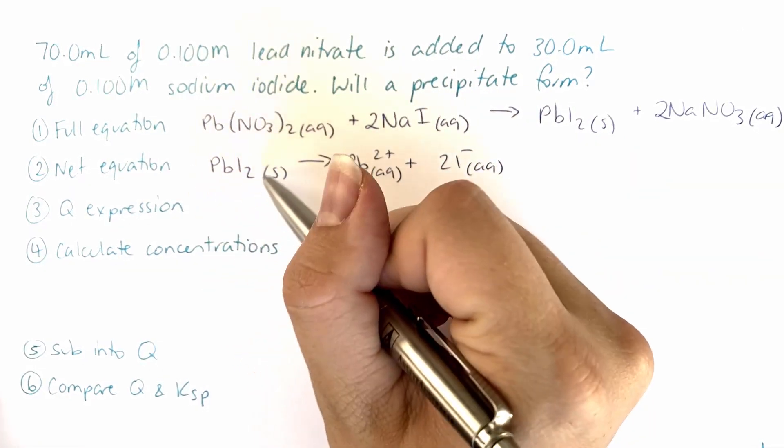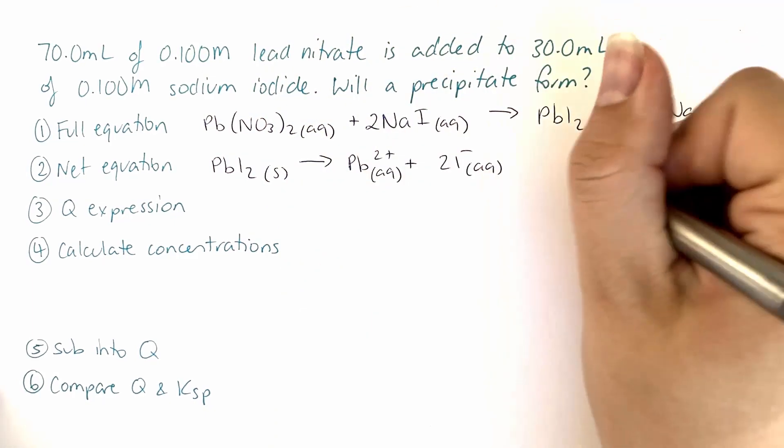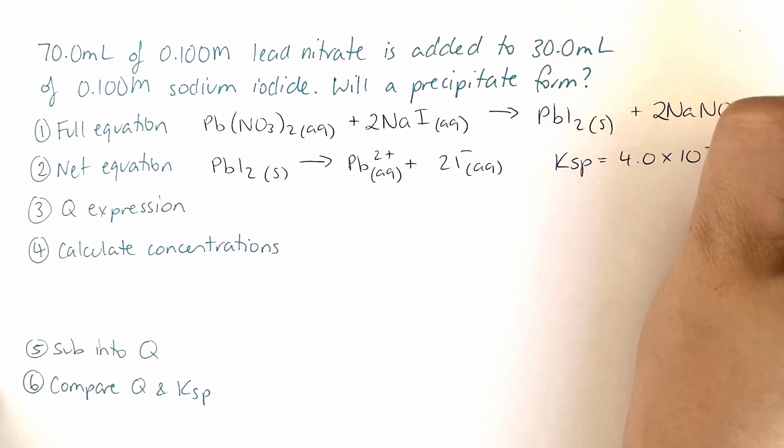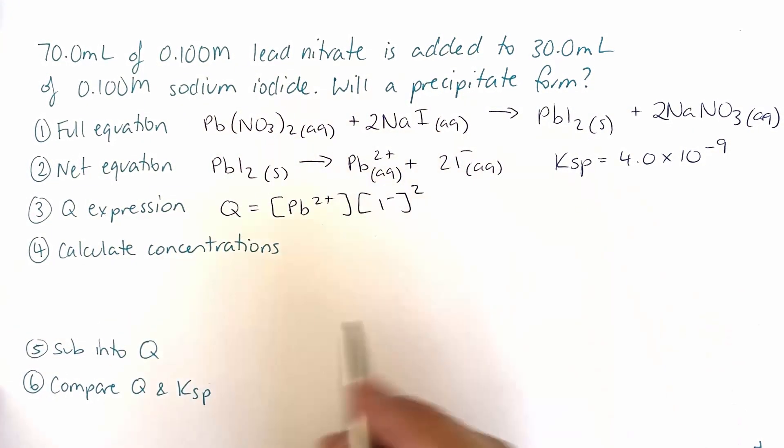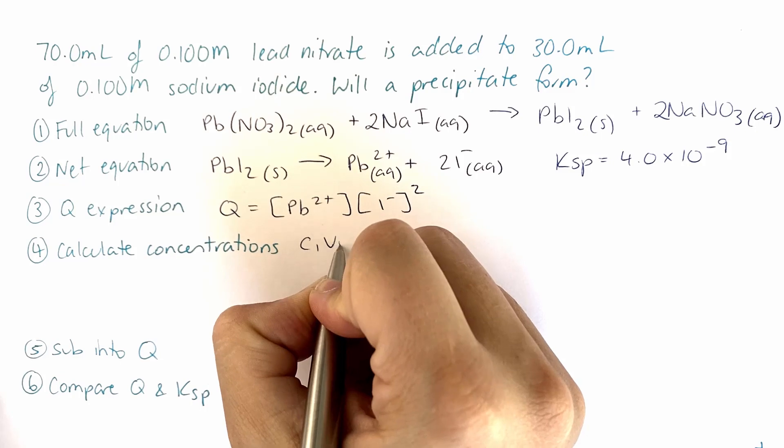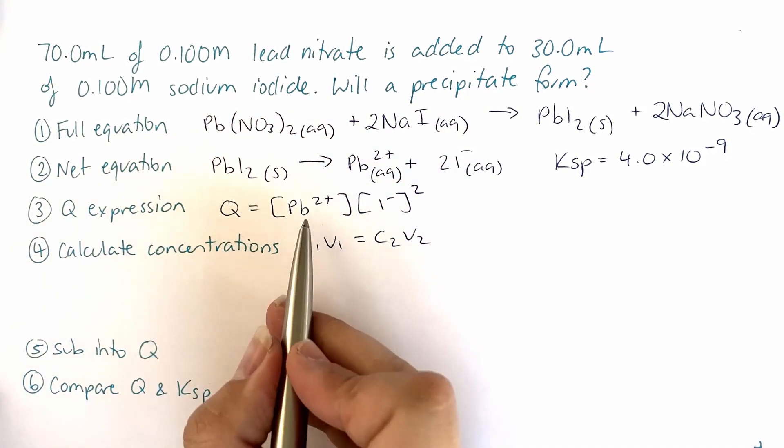Now the Ksp for this is on your chemical data sheet that you'll be given in your exam so you can just pull that straight from there. Our expression for Q is this, and now we need to calculate our concentrations. So we're going to use our same formula as before, the C₁V₁ equals C₂V₂ to calculate those. So let's start with the lead.